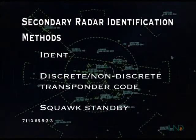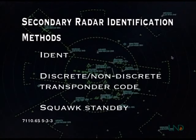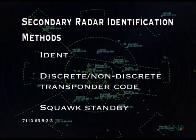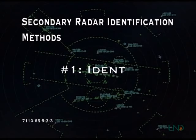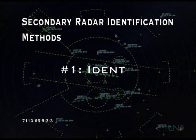In addition to the three primary radar identification methods, there are also three secondary or beacon methods. The first method involves asking the aircraft to ident. The pilot will activate the ident feature on the aircraft transponder and the target will begin to blink on the radar scope.